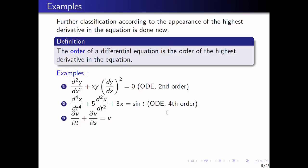Now we will see an example of a partial differential equation. Instead of dy/dx, we use the symbol del. The expression is: del v by del t plus del v by del s equals v. Here v is the dependent variable and t and s are the independent variables, so there are two independent variables making this a partial differential equation. The derivatives are of first order, so it is a first order PDE.